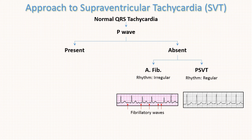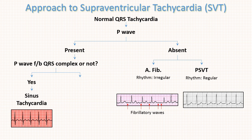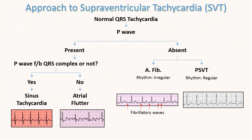In atrial fibrillation, fibrillatory waves are present in between. Now, if P waves are present, we check whether all P waves are followed by a QRS complex. If they are, it is sinus tachycardia. If not, the cause is atrial flutter, where a classic sawtooth pattern is seen. All T waves are masked by P waves, and the waves between QRS complexes are P waves.